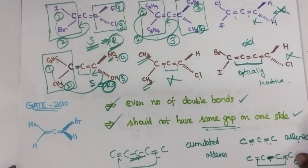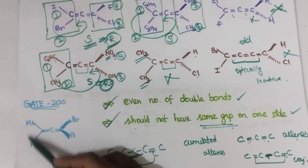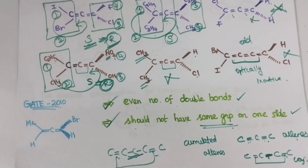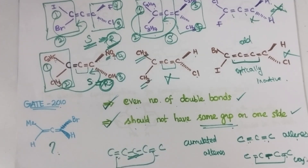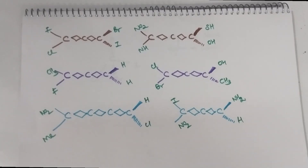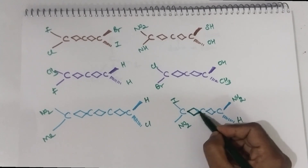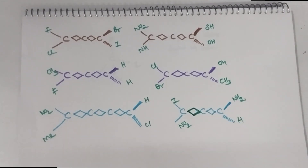Now, there is a previous year question asked in GATE 2010 — find out the R/S configuration for this compound and share your answer in the comment section. The same rules also apply for spirane systems. Why is it known as spirane system? Because it looks like a spiral. Hence, the system is known as spirane system. The rules we applied for allene are also applicable to spirane system.